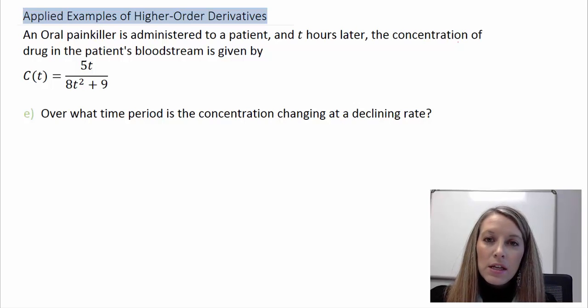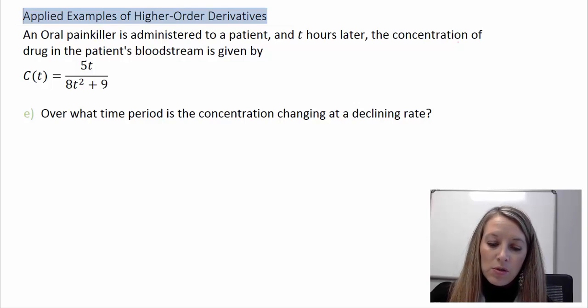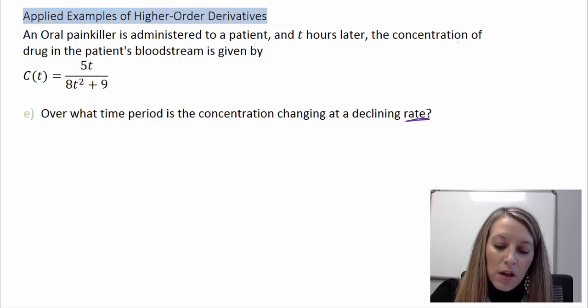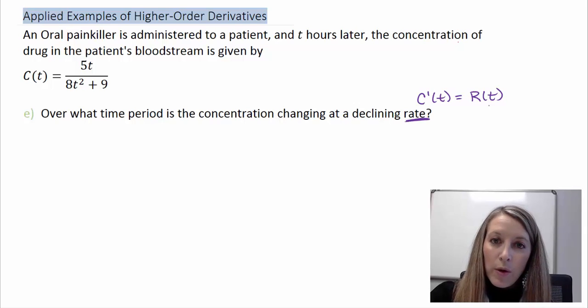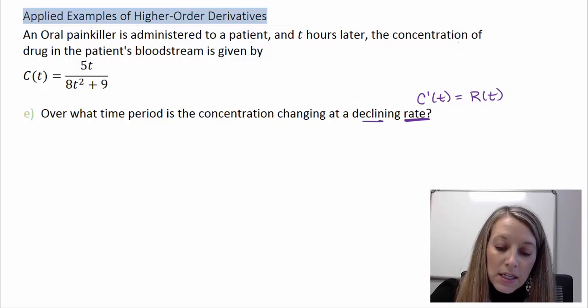over what time period is the concentration changing at a declining rate? Now, this is a little bit misleading here because you see the word rate and you think, oh, well, I'm going to go ahead and do my derivative equation, which we also labeled as my rate equation. But we have to think about this in a little bit more context. We want to know when our rate is declining.